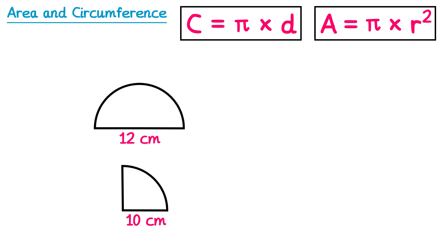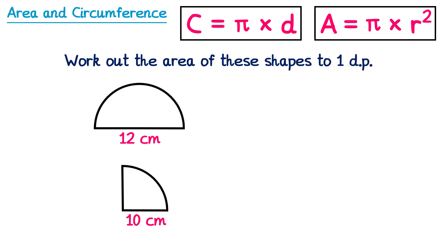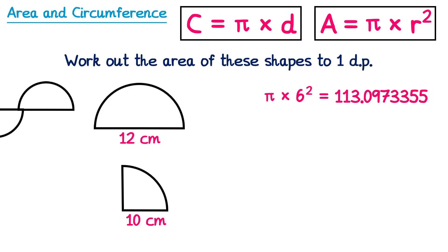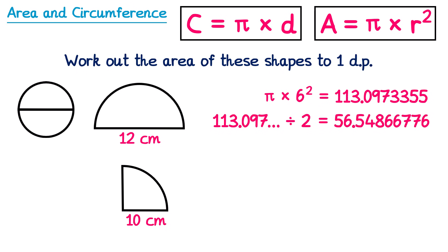Next we're going to look at what happens if you're given a semicircle or a quarter circle, starting with finding their areas. For the semicircle, we'll pretend for a moment it's a full circle. We'd find its area by doing pi times radius squared — pi times 6 squared, since the diameter is 12 so the radius is 6. That gives the area of the full circle, but we need two semicircles to make a full circle. So we take the full circle area and divide by 2. The area of the semicircle is 56.5 centimetres squared.